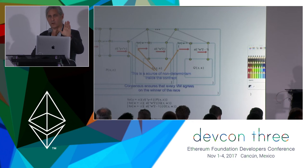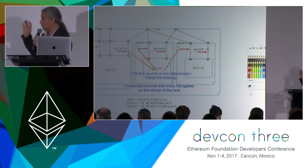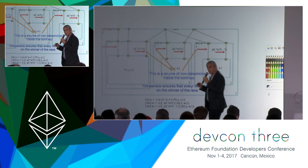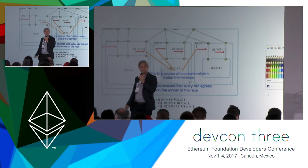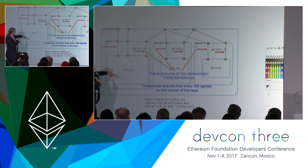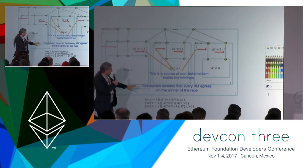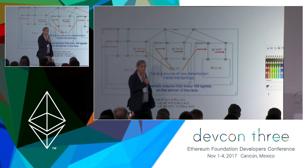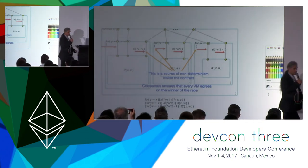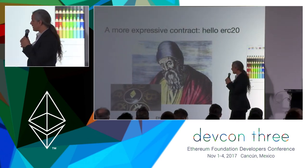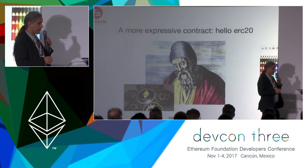I'm going to hold some questions because I want Kent to have time to talk. I'll quickly reiterate: the important point is that consensus ensures that every VM agrees on the winner of the race. That's the computational model here. Now let's look at ERC-20 and see how that works.